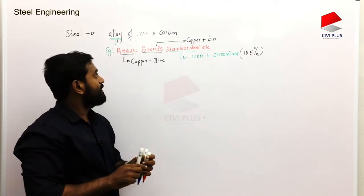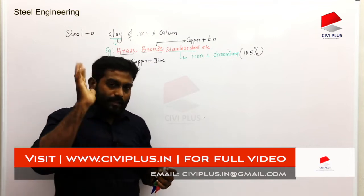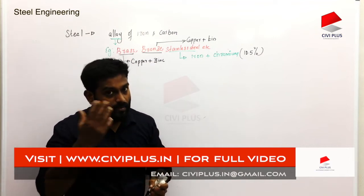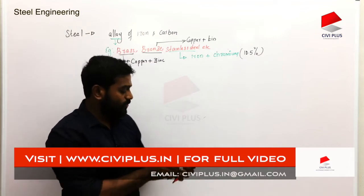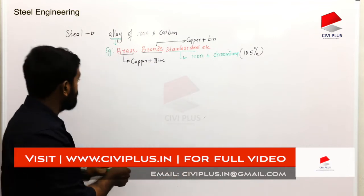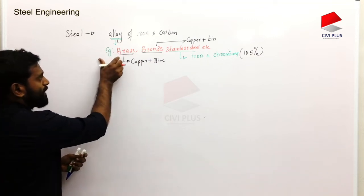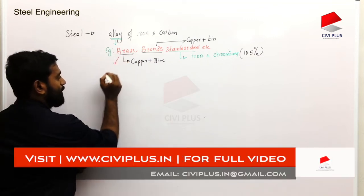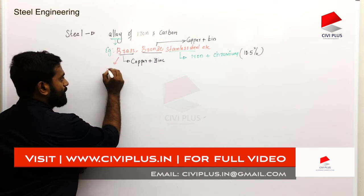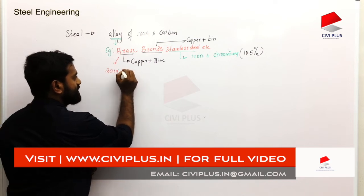Now, what is this? We will add a lot of questions. That is the number of chromium. This is brass — this brass is the number of chromium.